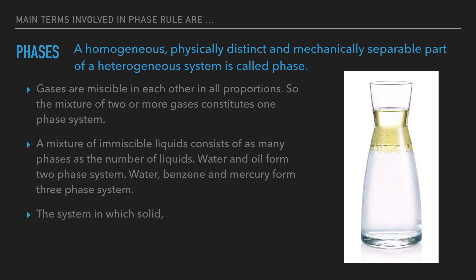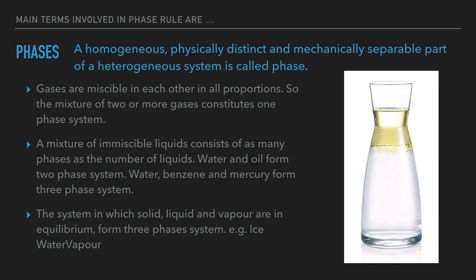A system in which solid, liquid, and vapor are in equilibrium forms a three-phase system. For example, ice, water, and vapor.